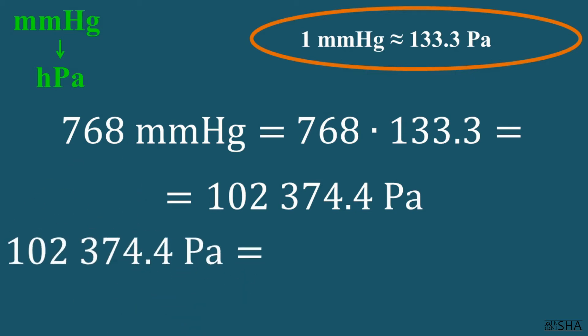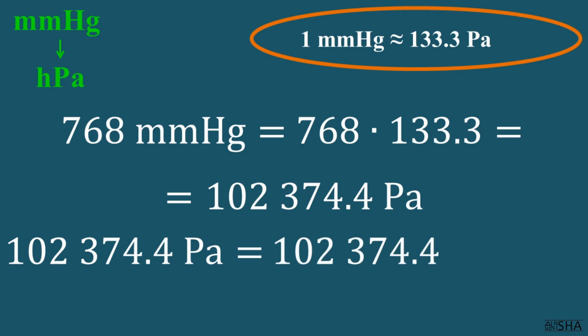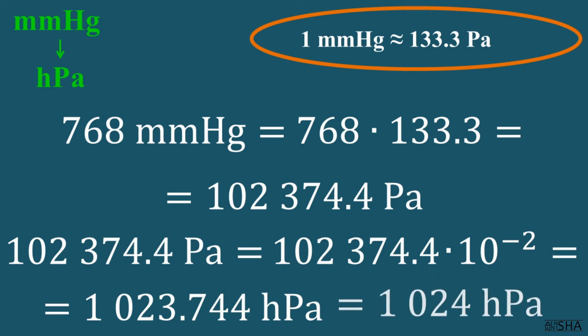Now we will write this number in hecto-pascals. From the third episode, you should remember that, if we convert from the SI system, we change the sign of exponent in the multiplier of the prefix hecto. So we multiply our number by 10 to the negative second power. According to math rules, we get 1023.744 hecto-pascals. The answer can be rounded. So we get 1024 hecto-pascals.